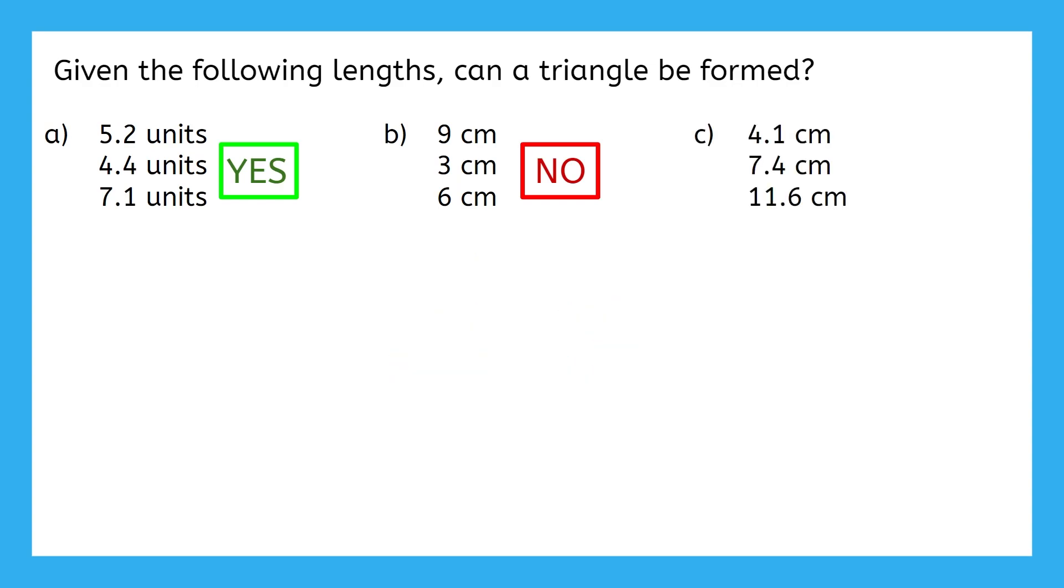What about part C? Calculate whether or not these sides can form a triangle. Let's use the triangle inequality theorem again to form three inequalities. Are these all true? Well, 4.1 plus 7.4 is 11.5. That's not greater than 11.6, so the second statement is false. We cannot make a triangle with these side lengths.